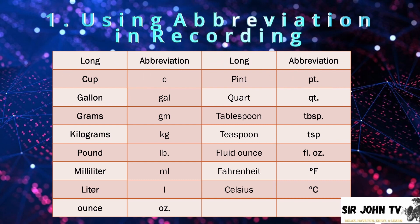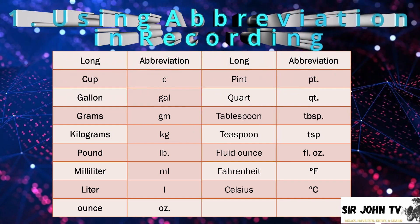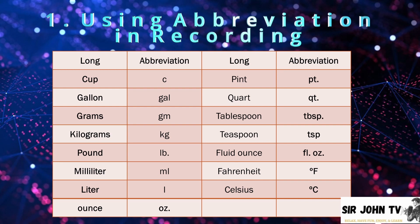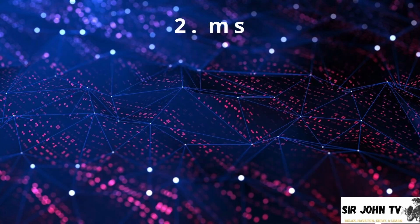Tablespoon tbsp or big letter T, teaspoon tsp or small letter t. While fluid ounce is fl oz, Fahrenheit is degrees Fahrenheit, and Celsius is degrees C. So remember to use this abbreviation in converting the units of weight and measurement to lessen your time in writing the long names of our units of measurement.